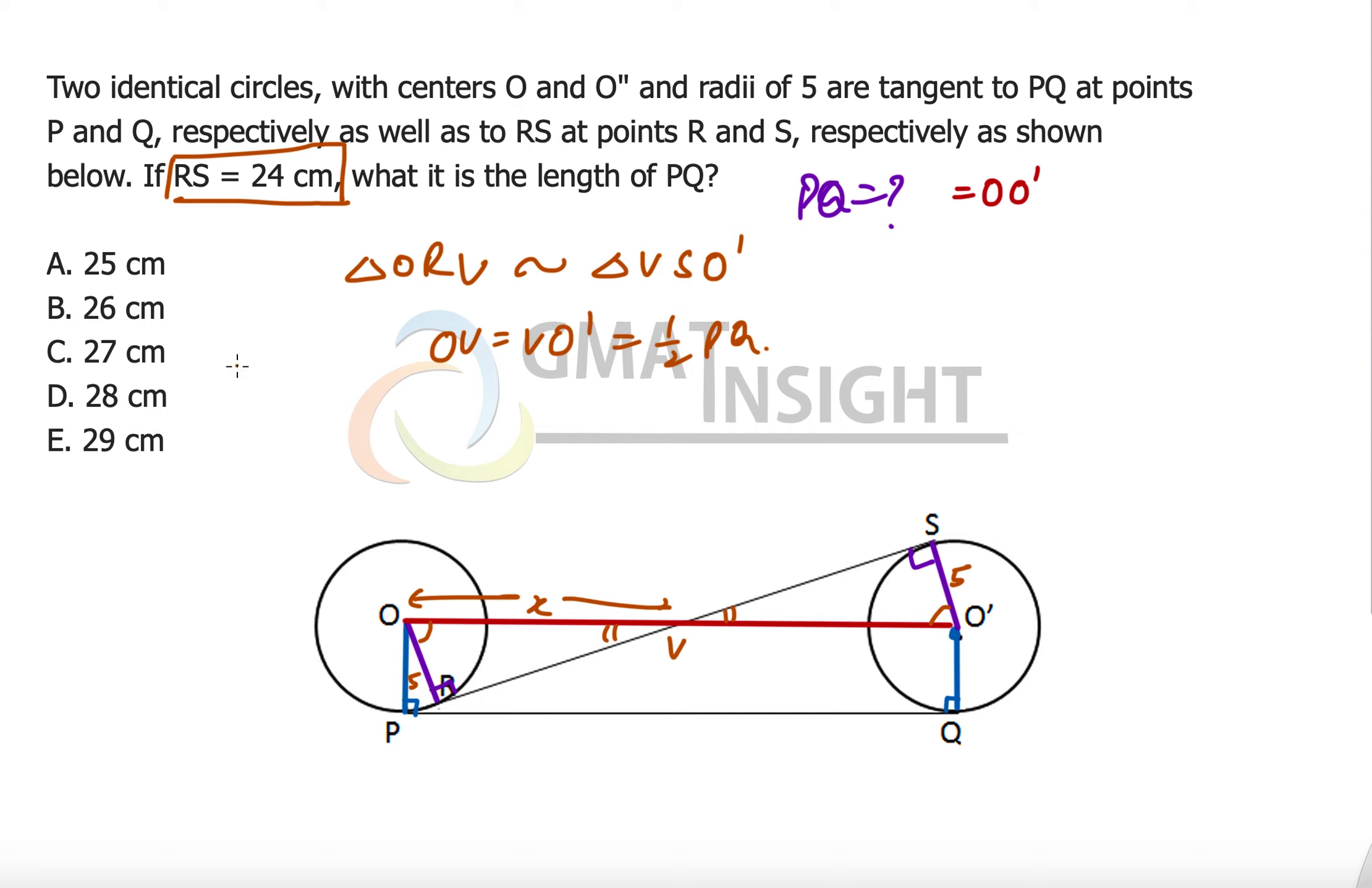And we want to just use this length 24. So from this x I am trying to reach to this length RS. So RV now is serving the purpose of one of the legs of this right triangle ORV.